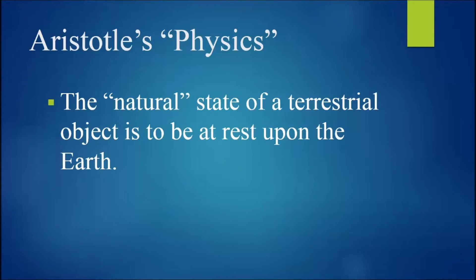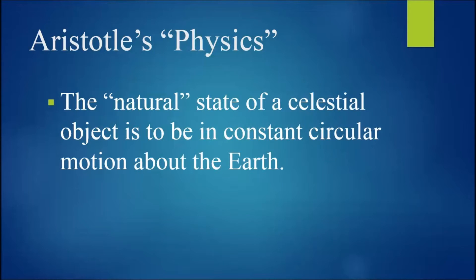To Aristotle, the natural state of a terrestrial object is to be at rest upon the earth, while the natural state of a celestial object is to be in constant circular motion about the earth.